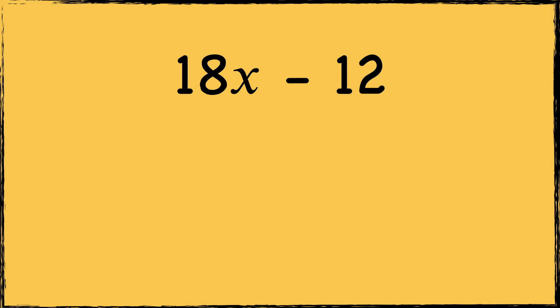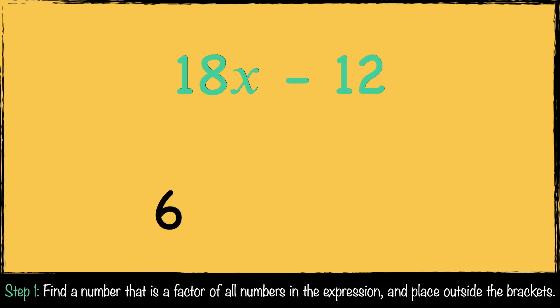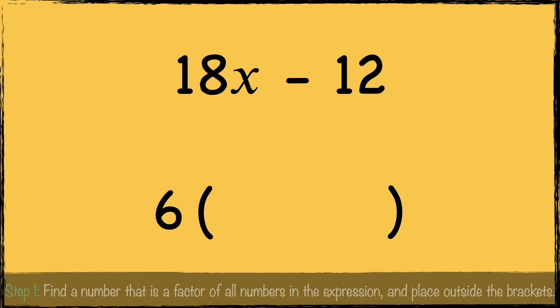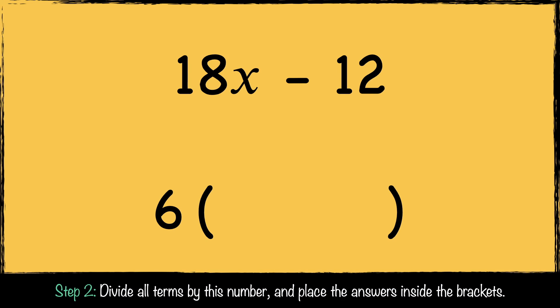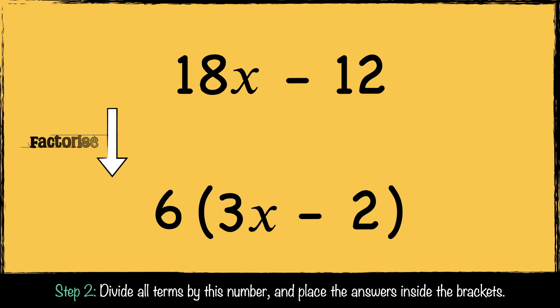Here's another example: 18x − 12. We need to find a factor of the terms in this expression. 6 is a factor of both 18 and 12, so we put 6 in front of the brackets. Now we divide the terms by 6: 18x divided by 6 is 3x, and −12 divided by 6 is −2. So this expression can be factorized to 6(3x − 2).